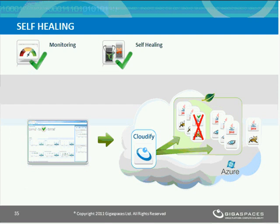Now that the application is deployed, we need to address post-deployment aspects: what happens if the application fails, and what happens if there is too much load. For that, we have something called self-healing. Self-healing is automation of the failover process. If we do failover ourselves, we typically detect which machine failed, start a new machine, and provision a new service into that machine to take over the failed instance. Instead of doing it manually, Cloudify does that automatically — that's why it's called self-healing.